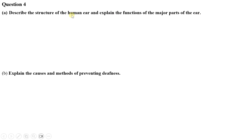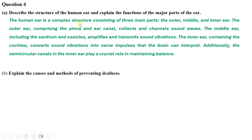Question four (a) — describe the structure of the human ear and explain the functions of the major parts: the human ear is a complex structure consisting of three main parts — the outer, middle, and inner ear. The outer ear, comprising the pinna and ear canal, collects and channels sound waves. The middle ear, including the eardrum and ossicles, amplifies and transmits sound vibrations. The inner ear, containing the cochlea, converts sound vibrations into nerve impulses that the brain can interpret. The semicircular canals in the inner ear play a crucial role in maintaining balance.